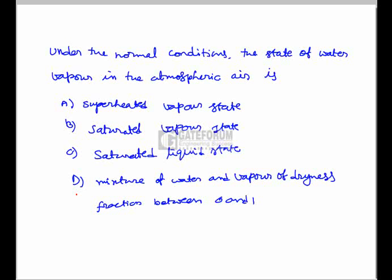Under normal conditions, the state of water vapor in the atmosphere is: (A) superheated vapor state, (B) saturated vapor state, (C) saturated liquid state, or (D) a mixture of water and vapor with a dryness fraction between 0 and 1.